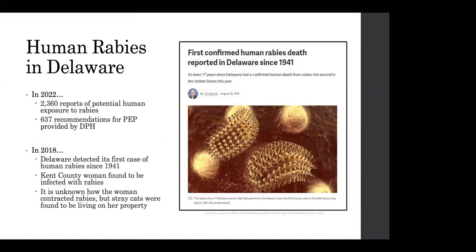Moving on to human rabies in Delaware. In 2022, we saw 2,360 reports of potential human exposures to rabies. Of these reports, we recommended post-exposure prophylaxis for 637 people. This may seem like a pretty high number. It is because of a variety of reasons — it can range from the owner not cooperating with animal welfare or the individual not having owner information. So out of an abundance of caution, we tend to recommend post-exposure prophylaxis for the person that was exposed. In 2018, we did detect our first case of human rabies since 1941. This case was a Kent County woman who was found to be infected. It is still currently unknown how the woman contracted rabies, but stray cats were found to be living on her property.